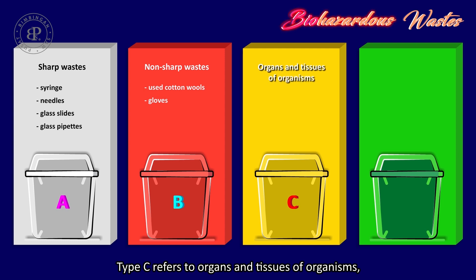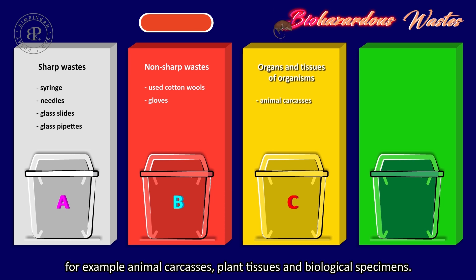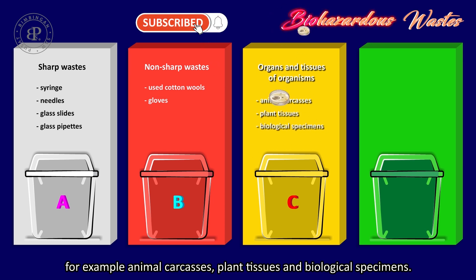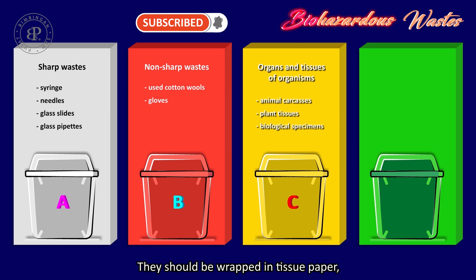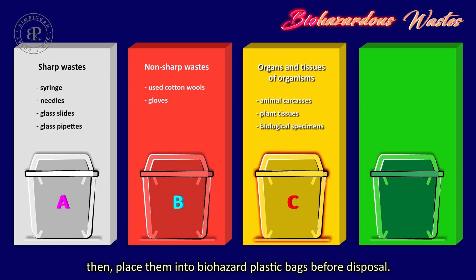Type C refers to organs and tissues of organisms, for example animal carcasses, plant tissues and biological specimens. They should be wrapped in tissue paper, then placed into biohazard plastic bags before disposal.